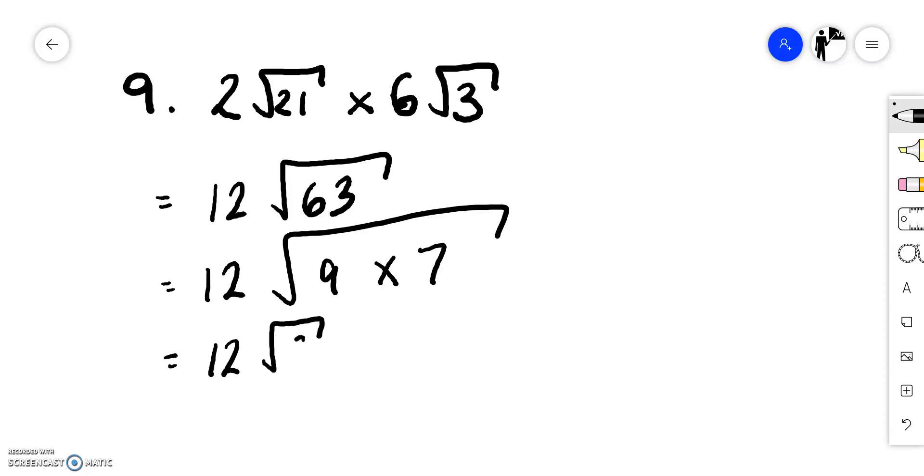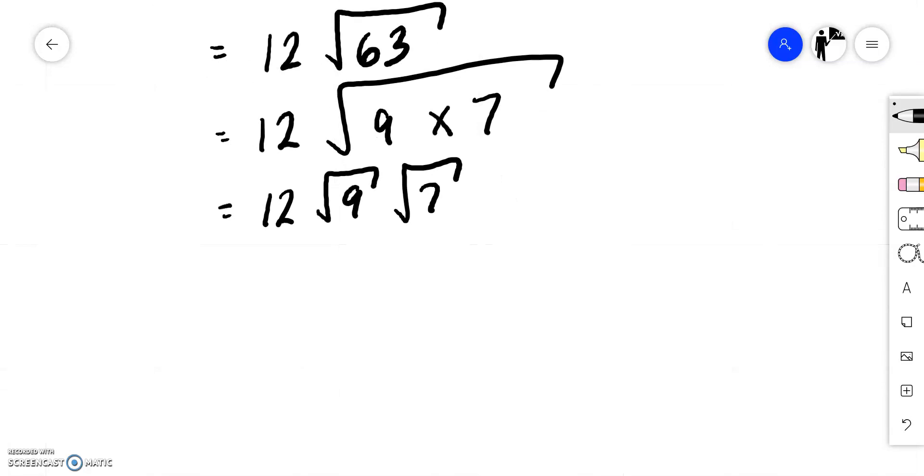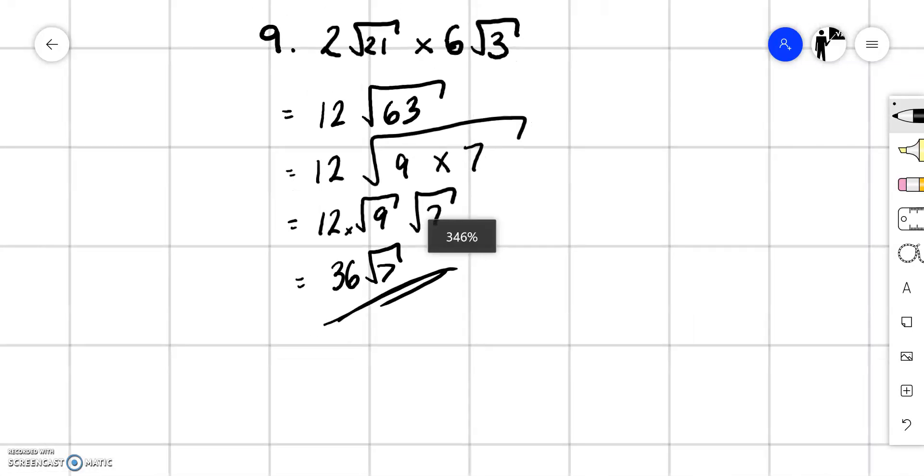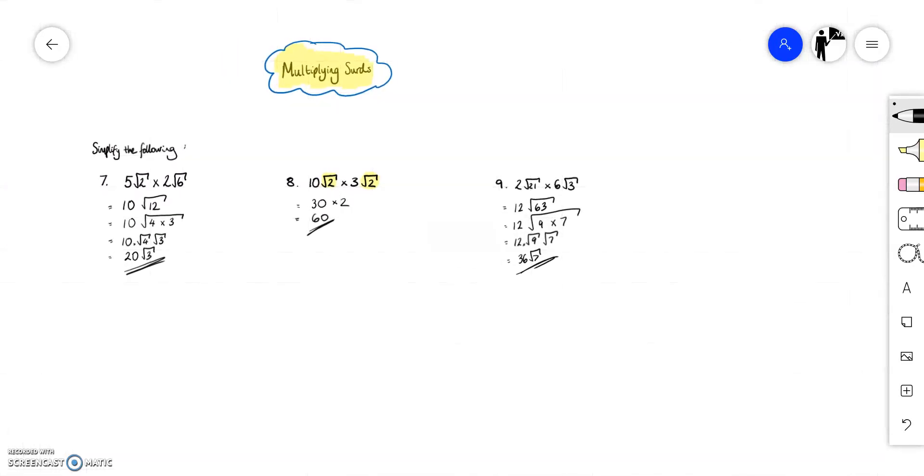That's going to be 12 times root 9 times root 7. Remember there's a multiplication there. Square root of 9 is 3. So it's going to be 12 times 3, which gives 36 root 7. Okay just three examples here to show you how that works through. Thank you very much.